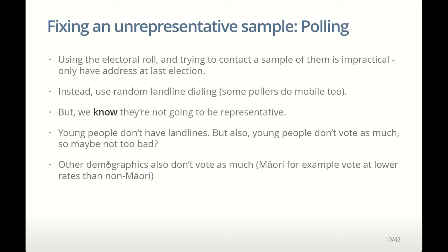Unfortunately the electoral roll only holds the person's address at the last election, so we'd have to find out how to contact them to do a proper simple random poll. Instead we take shortcuts — we might use random dialing of mobile phones, for example, just randomly dial mobile phones in New Zealand and get a thousand of them, then ask the person who picks up how they're intending to vote at the next election.